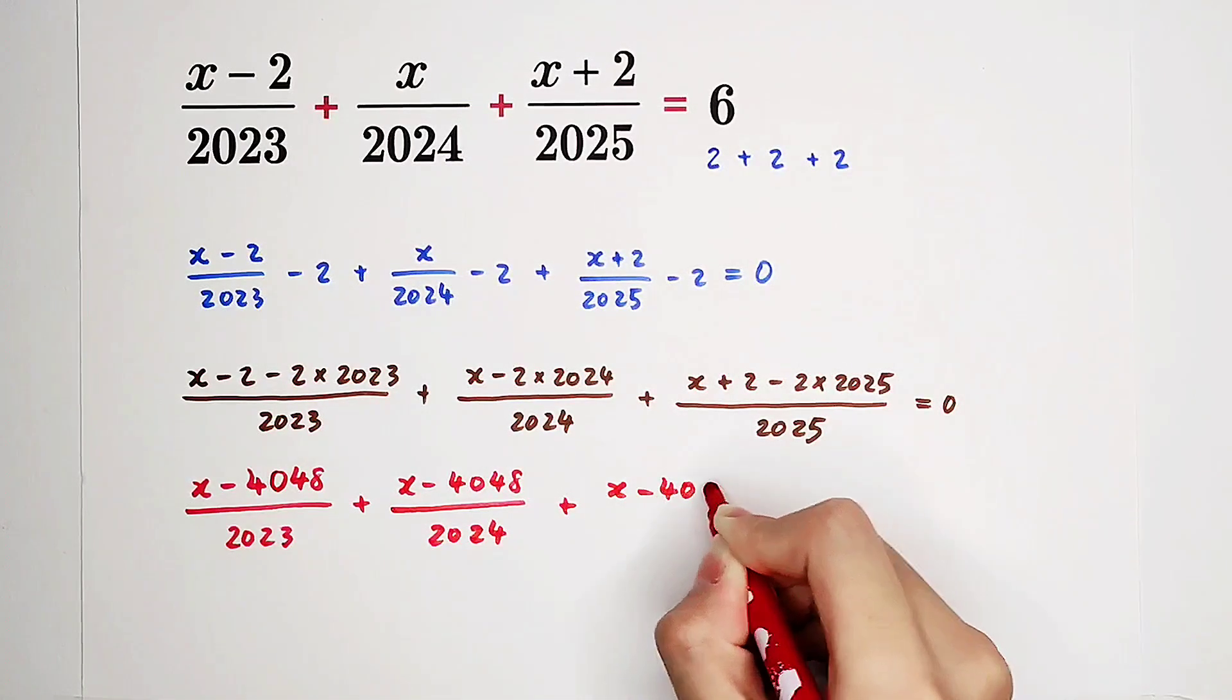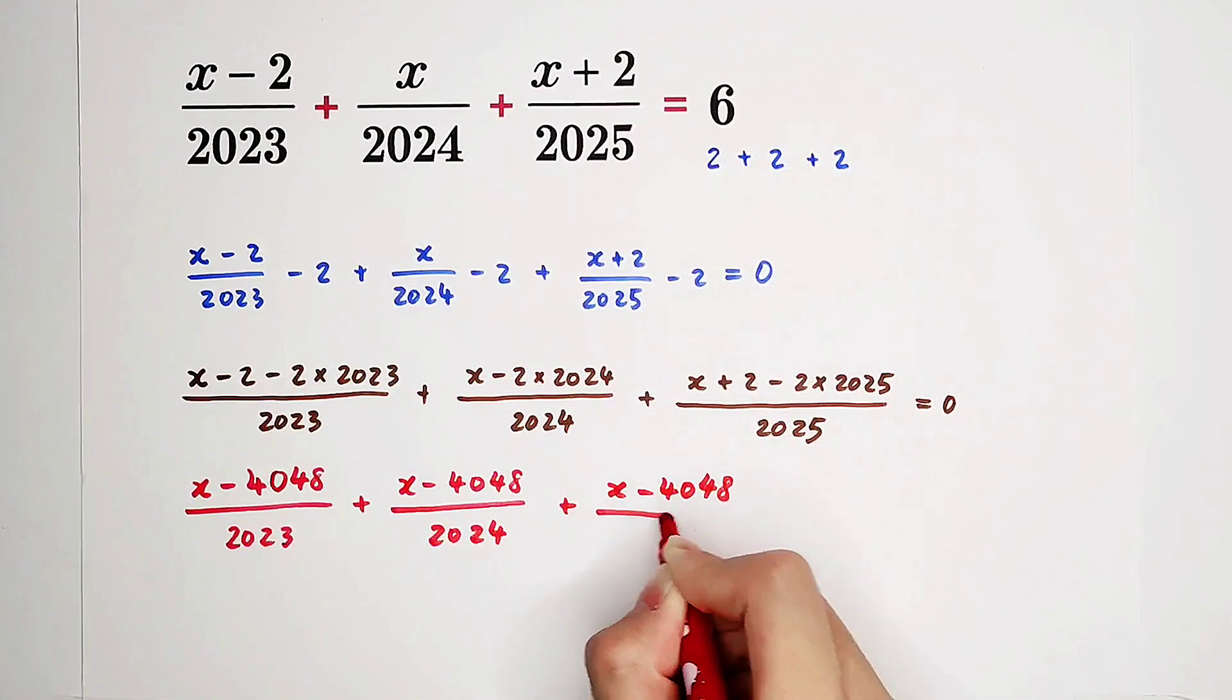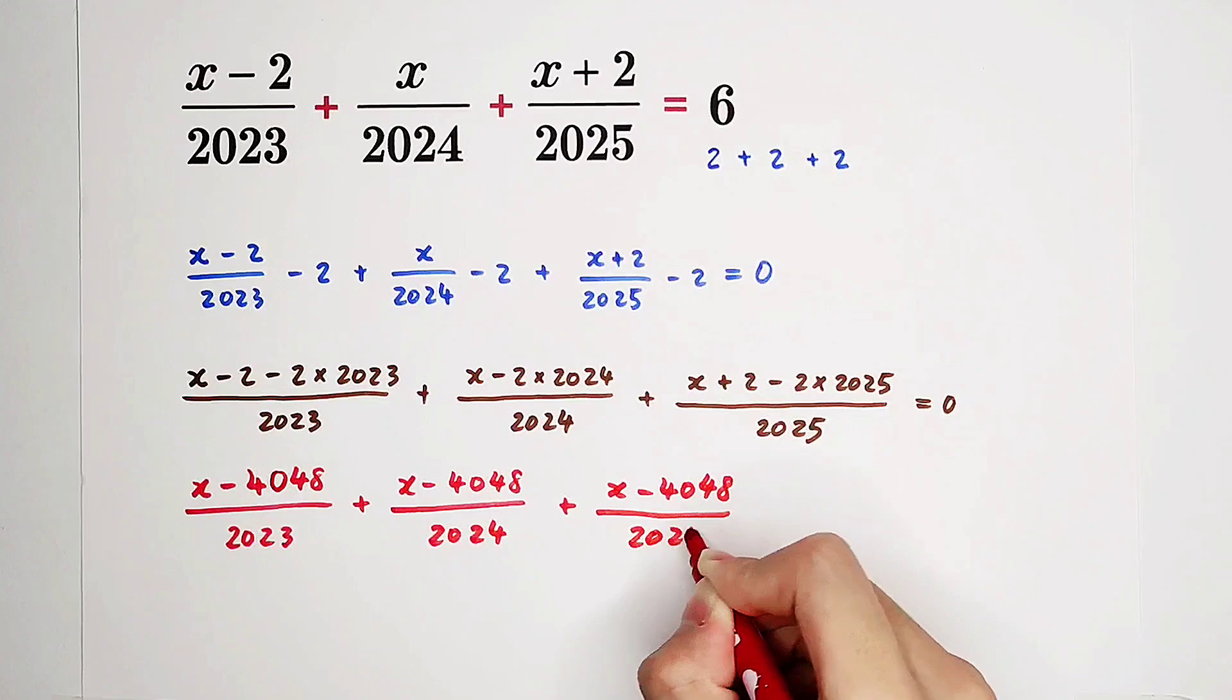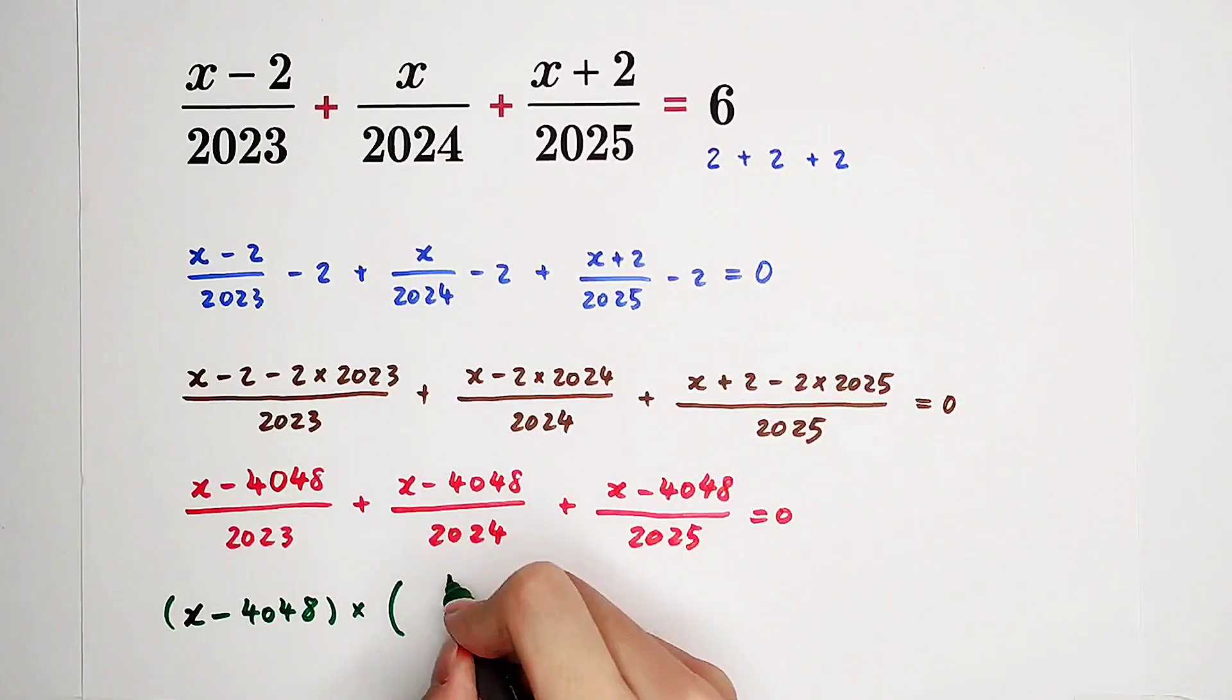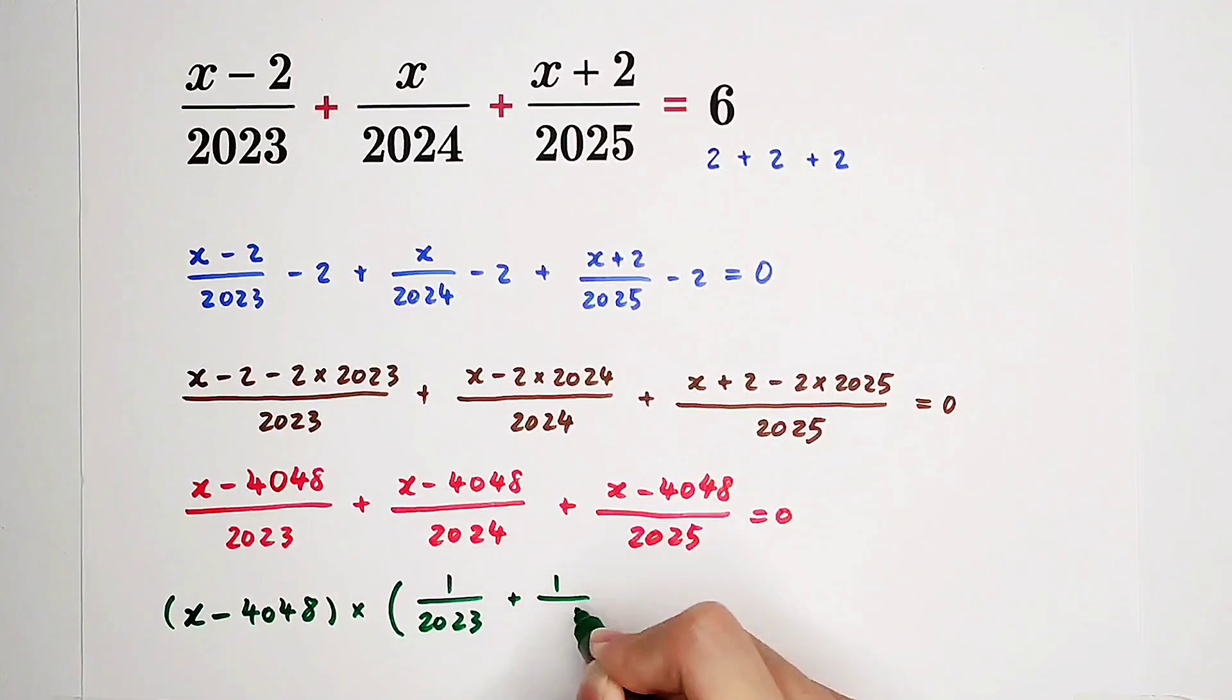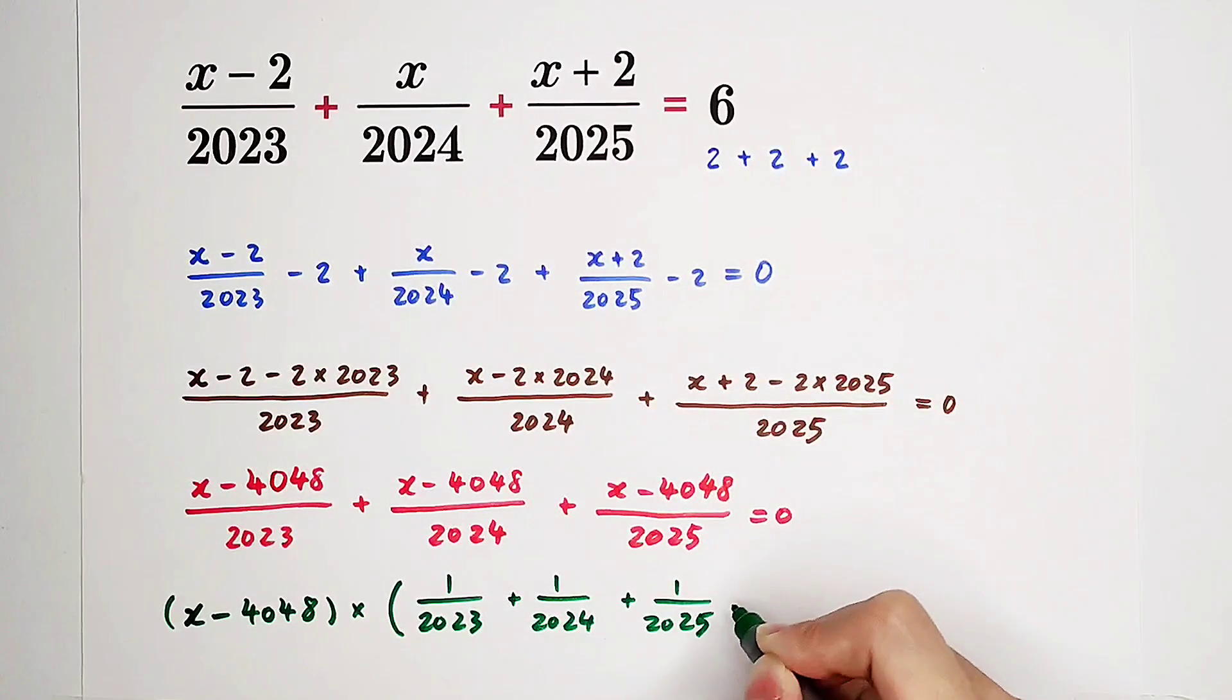If the numerators are equal, what can we do then? It's just X minus 4048 times one over 2023 plus one over 2024 plus one over 2025 equals zero.